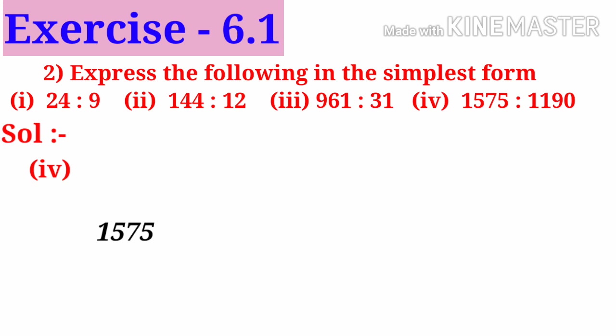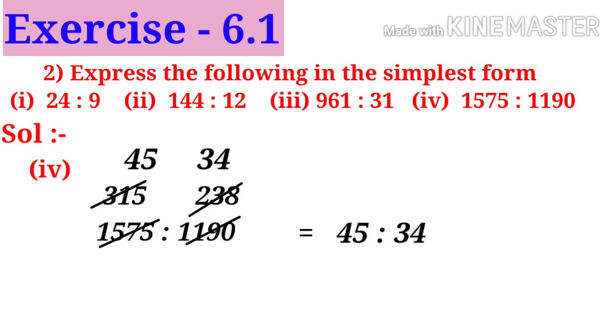Number 4: 1575 is to 1190. On simplification by 5, we get 315 to 238. Now on simplification by 7, we get 45 to 34. So the ratio is 45 is to 34.